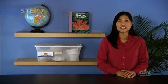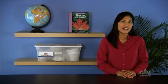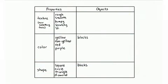Remind students of your discussion of hard and soft objects at the beginning of the activity. Explain that these words tell what an object feels like and describe another property of objects called texture. Encourage students to think of more texture words by asking them how the objects on their tray feel. Students may come up with rough, smooth, bumpy, scratchy, and slippery. Add these texture words to the properties chart.